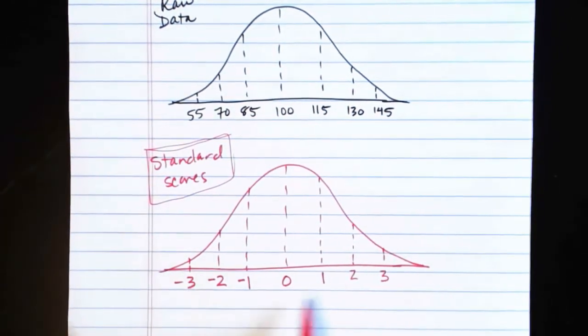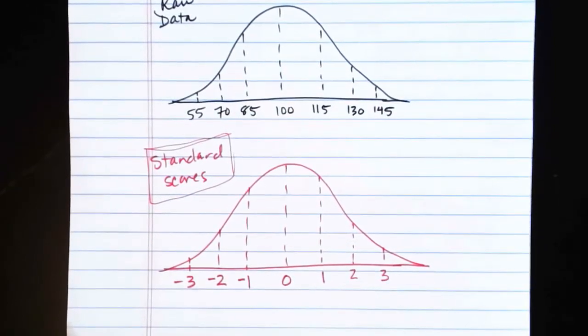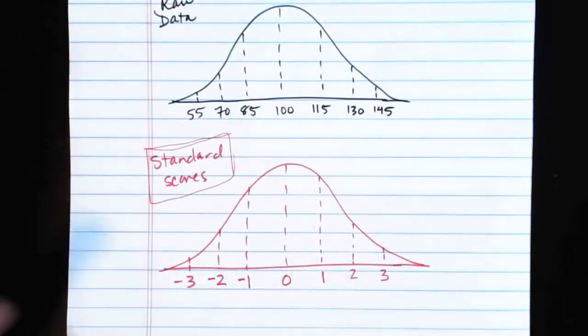What z-scores tell you, what those values are actually telling you, is how many standard deviations either above or below the mean that you're looking at. And all of the stuff from the empirical rule still applies.